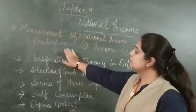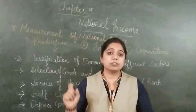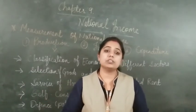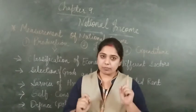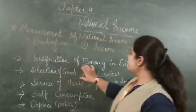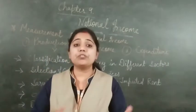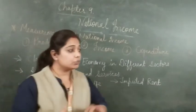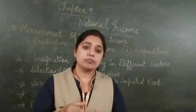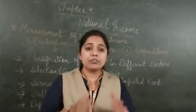Now we are going to see the first method: the production method. Alfred Marshall's definition says that the monetary value of the final or finished goods and services is known as national income. The first step is the classification of the economy into different sectors. We have already classified three sectors: agriculture sector, service sector, and industrial sector.